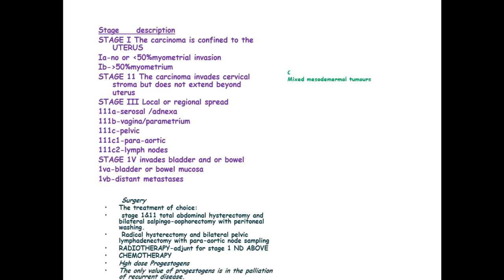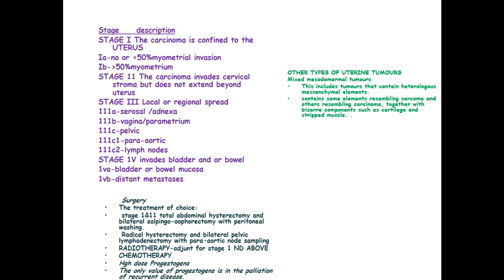We have other types of uterine tumors like mixed mesodermal tumors which include tumors that contain heterologous mesenchymal elements. It contains some elements resembling a sarcoma and others resembling a carcinoma together with bizarre components such as cartilage and striated muscle.